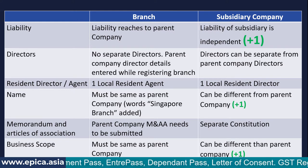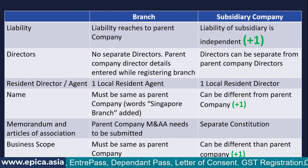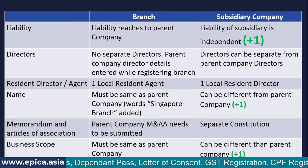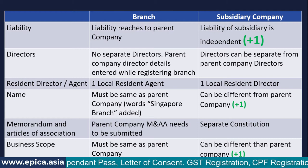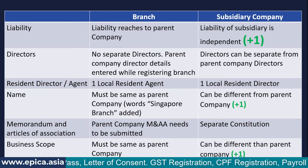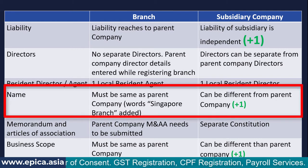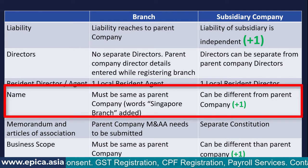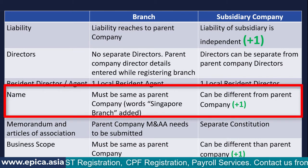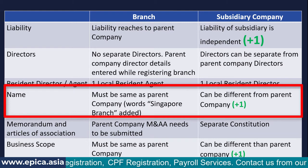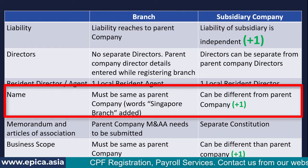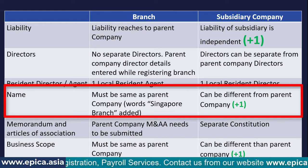As far as directors and resident director requirements are concerned, they are only slightly different in both these entities, so no specific form scores here. The name of the branch must be the same as the parent entity with the word 'Singapore branch' added, whereas in the case of a subsidiary company, it can be entirely different from the parent company.